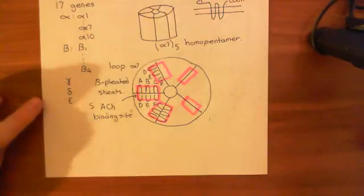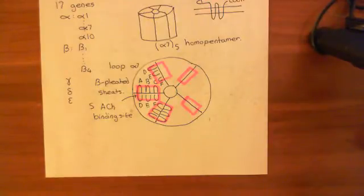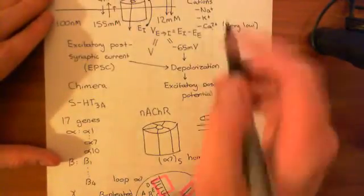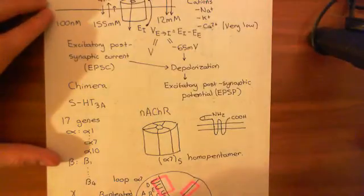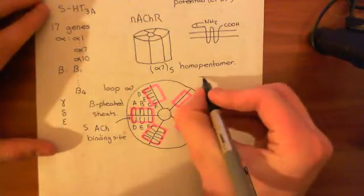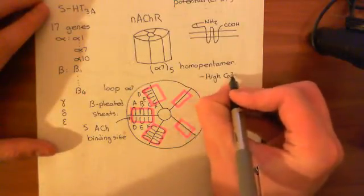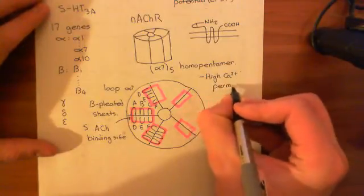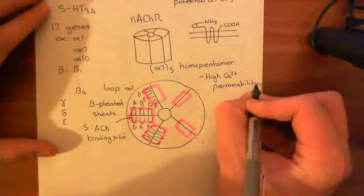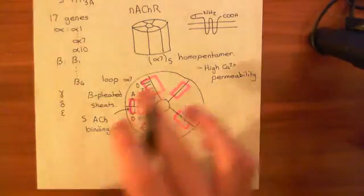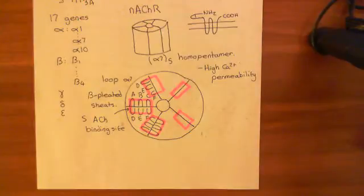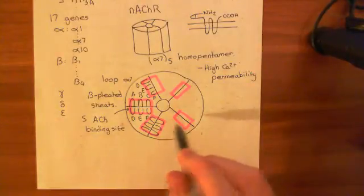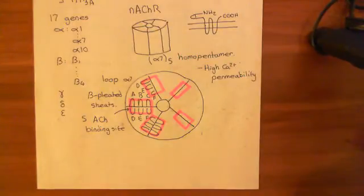Just like the 5-HT3 receptor, the alpha-7 homopentamer is permeable to cations. The difference is that it's far more permeable to calcium than the 5-HT3 receptors — it has a relatively high calcium permeability, while still being very permeable to sodium and potassium. As a fun fact, the alpha-7 homopentamer is found in the brain and seems to be involved in the addiction process for nicotine. Nicotine binds to these acetylcholine binding sites and activates the receptor just like acetylcholine.